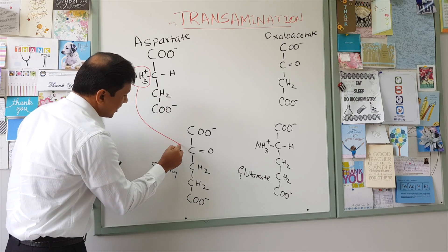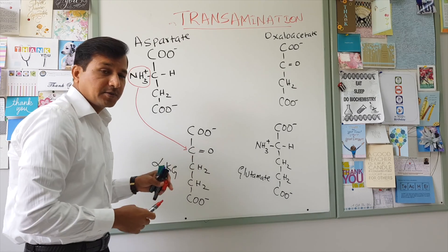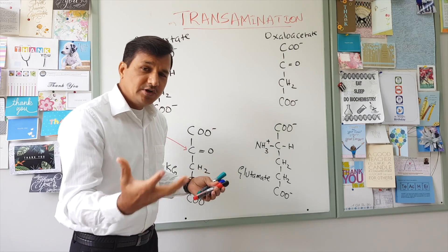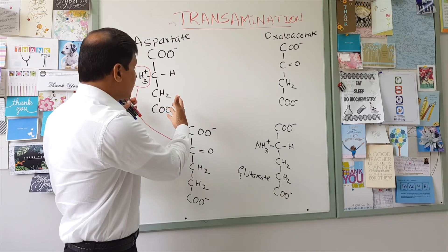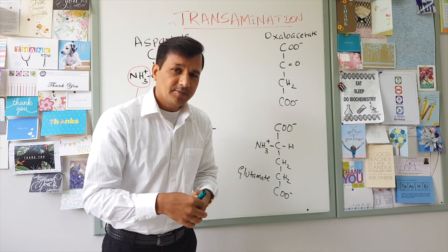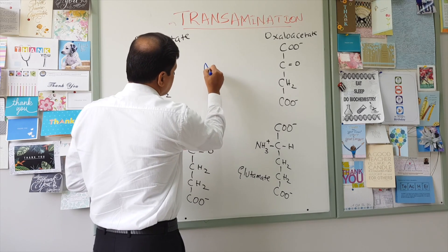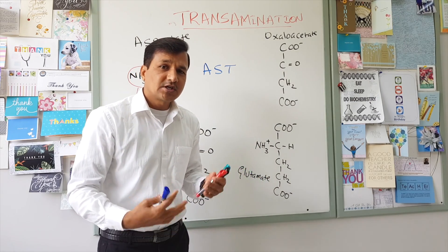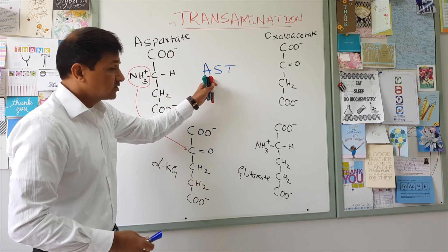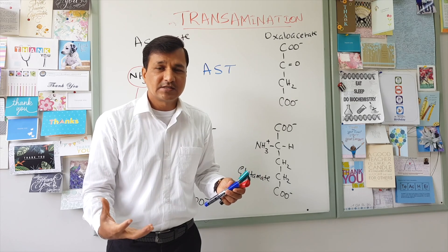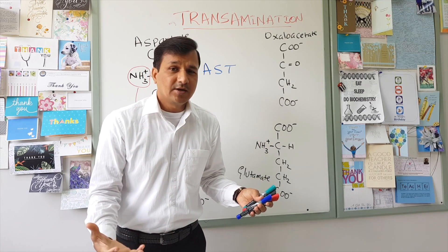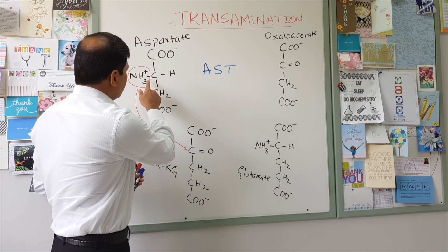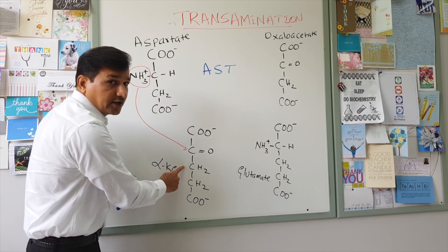The amino group will be transferred from aspartate onto the alpha carbon of alpha ketoglutarate. The enzyme that does this job is called AST, that is aspartate transaminase, because aspartate's amino group is transferred to alpha ketoglutarate. Aspartate transaminase is found both in the cytoplasm and in the mitochondrial matrix in different tissues.